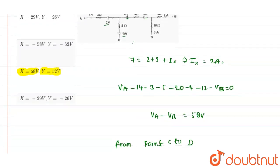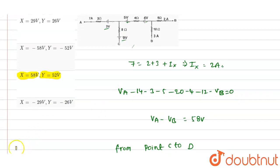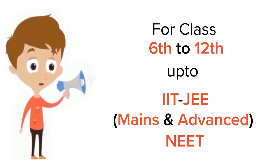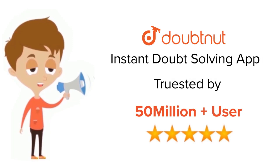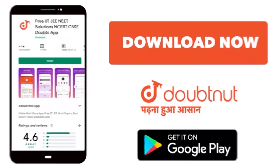So that is the answer that we have got, so option c is the correct answer for this question. Thank you. For class 6-12, IIT-JEE and NEET level, trusted by more than five crore students, download Doubtnet app today.